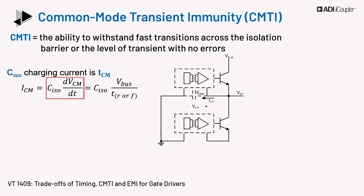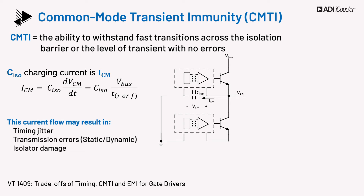The slew rate depends on the bus voltage divided by rise or fall time. ICM flows through the isolator and can overload the isolator transmitter or receiver. This current flow may result in the following issues: timing jitter, which may change propagation delay beyond the allowable bounds as per spec in the datasheet; transmission errors, such as static errors when the input is not switching and the output is held either high or low; dynamic errors present during switching; and finally, isolator damage.